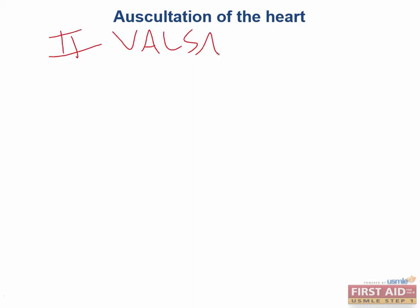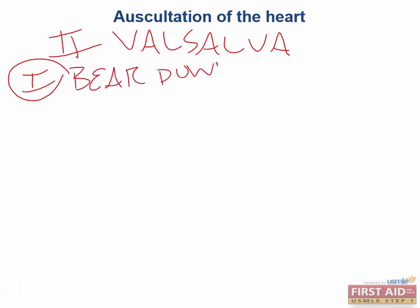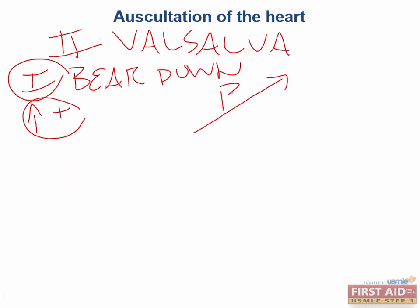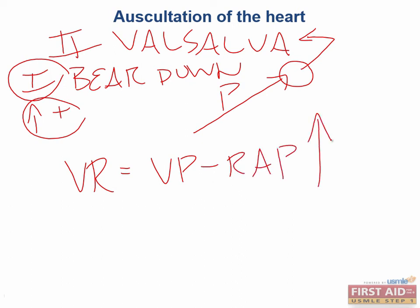One last thing to discuss is what phase 2 of Valsalva means and how it relates to auscultation of murmurs. Phase 1 is when you bear down as if having a bowel movement or lifting something heavy, increasing intrathoracic and intra-abdominal pressure. When you hit the peak of this pressure, you are in phase 2 of Valsalva. This pressure peak prevents return of venous blood to the heart. Venous return equals venous pressure minus right atrial pressure — we're increasing right atrial pressure by increasing intra-abdominal and intrathoracic pressure, which decreases venous return and therefore decreases preload.